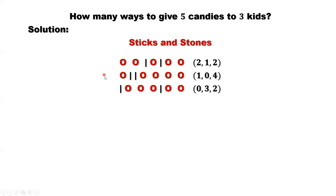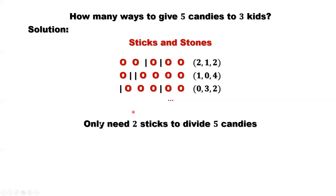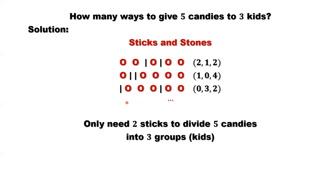So we can list all possibilities this way. The idea of sticks and stones: the candies are stones. Here, we have three kids, so we only need two sticks to divide five candies into three groups — the first group for the first kid, the second group for the second kid, the third group for the third kid. One important piece of information is the number of sticks we need. We will use this to derive the general formula.